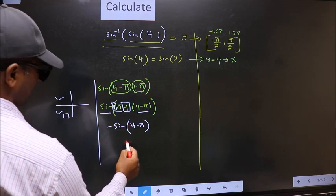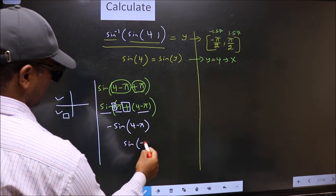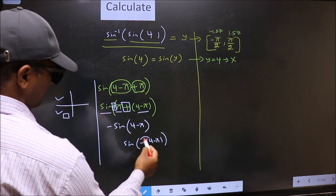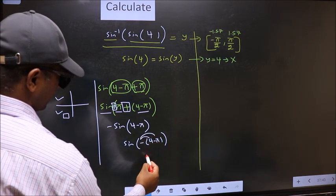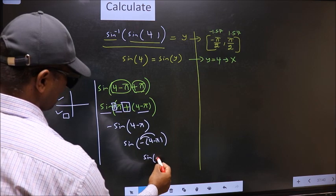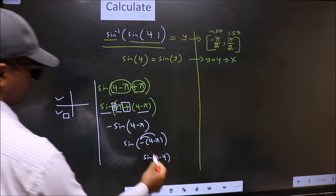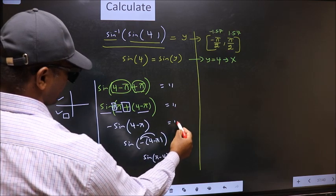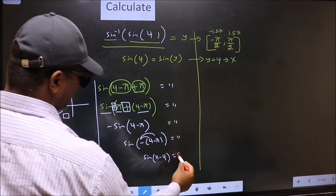Now shift the negative inside. We get sin negative 4 minus pi. Now you multiply with negative, this interchange. We get sin pi minus 4. On the other side no change, equal to sin y.